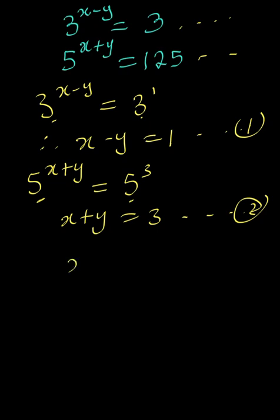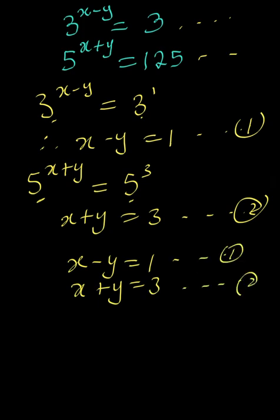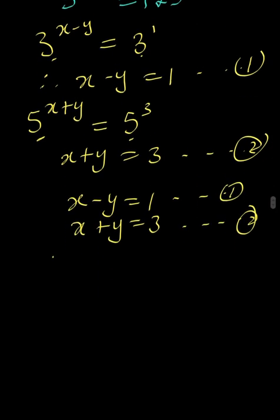Now, bringing closer equation 1 and equation 2, we shall have this. This is 1 and this is 2. Now, assuming you want to add the two equations, you will notice that minus y plus y is 0. It has gone. That is solving by elimination method.